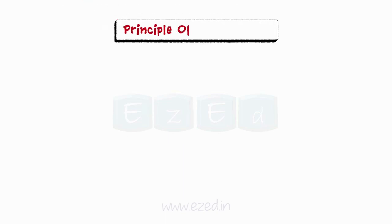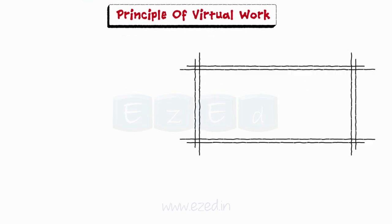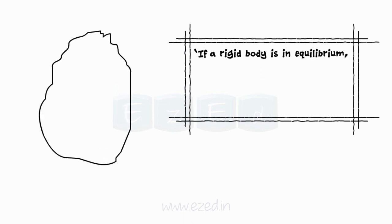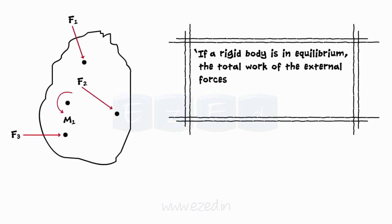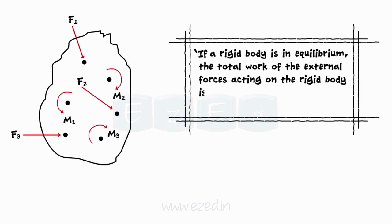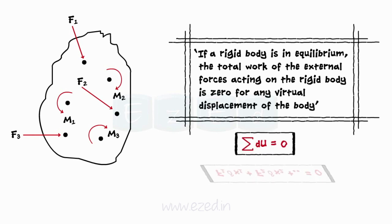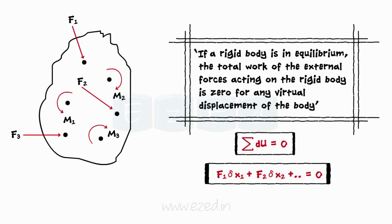We will now learn about the principle of virtual work. This principle states that if a rigid body is in equilibrium, the total work of the external forces acting on the rigid body is zero for any virtual displacement of the body. The principle can be mathematically stated as follows.